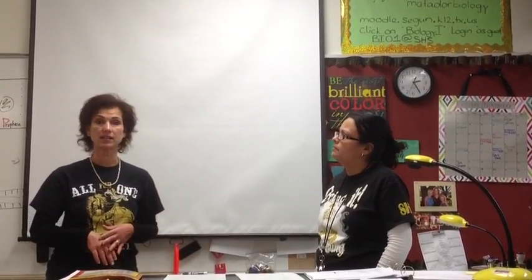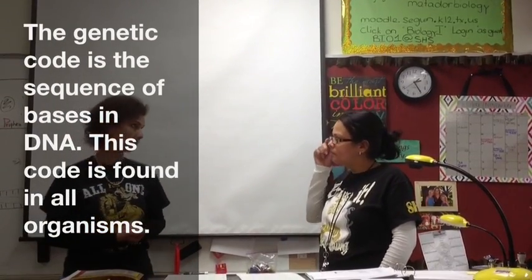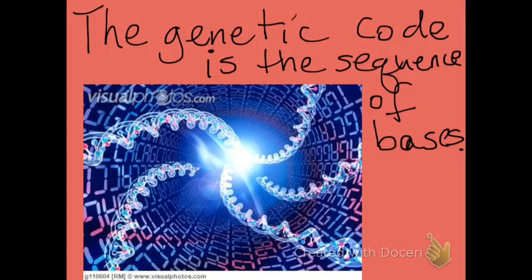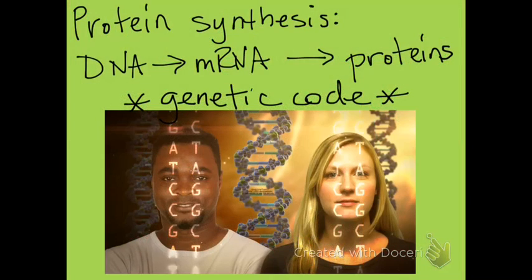The genetic code is found in all organisms, from the tiniest bacterial cell to the giant blue whale, to trees, plants, fungi, and protists. The genetic code is a sequence of bases common to all organisms. Everything about organisms is determined by DNA, which holds the genetic code in the order of bases. Protein synthesis involves transferring information from DNA to mRNA, then from mRNA to proteins.